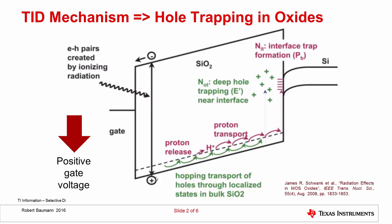We've seen this diagram before, but I'll go through it for those who haven't seen the earlier videos. This is a band structure of an MOS device — a metal oxide semiconductor device. The horizontal axis is the real physical axis of the device. We have the gate on the left-hand side, the oxide in the middle as the insulating layer, and the silicon substrate on the right. The vertical axis denotes electron potential energy, so as the electron moves up on the diagram it's gaining potential energy, and as it moves down it's losing potential energy.